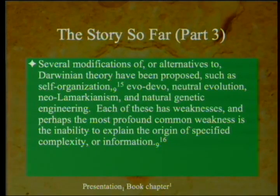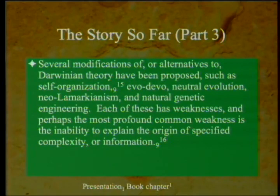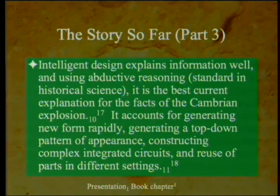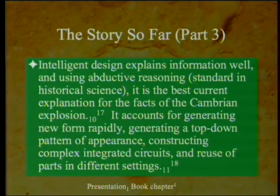Evo Devo, Neutral Evolution, Neo-Lamarckianism, and Natural Genetic Engineering — each of these has weaknesses, and perhaps the most profound common weakness to all of them is the inability to explain the origin of specified complexity or information. Intelligent design explains information well, and using abductive reasoning, standard in historical science, it is the best current explanation for the facts of the Cambrian explosion. It accounts for generating new forms rapidly, generating a top-down pattern of appearance, constructing complex integrated circuits, and the reuse of the same part in different settings.